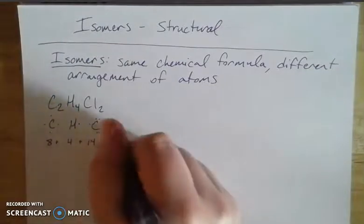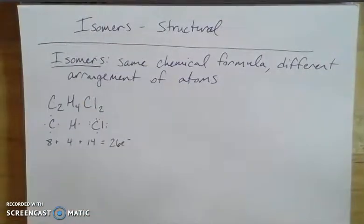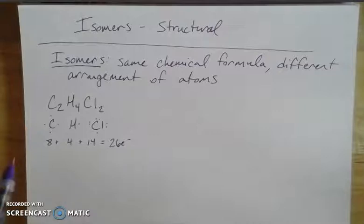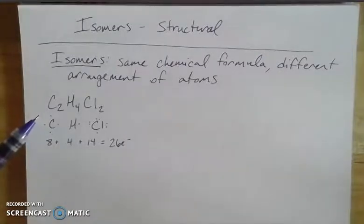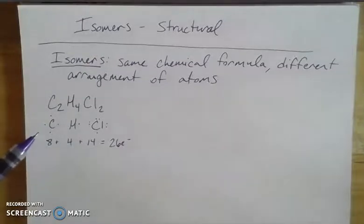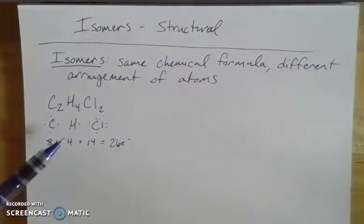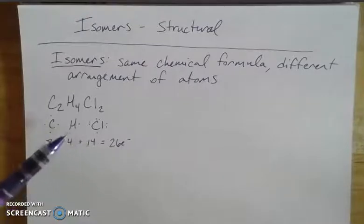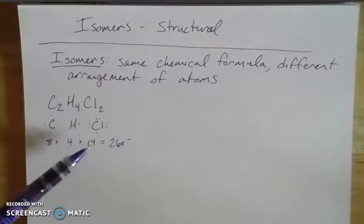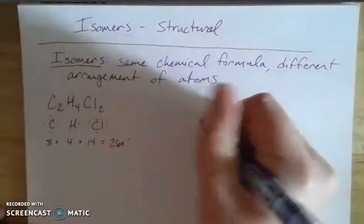That gives us 26 total electrons to work with. Usually, the element listed first is at the center of the structure, and this makes sense because it wants to make the most bonds. Hydrogen and chlorine can only share one electron each, whereas carbon has four bonding positions and tends to be at the center of structures.